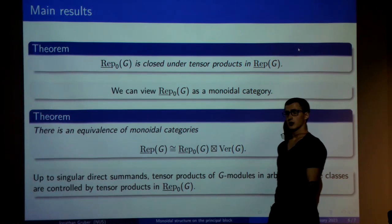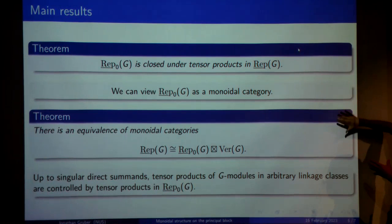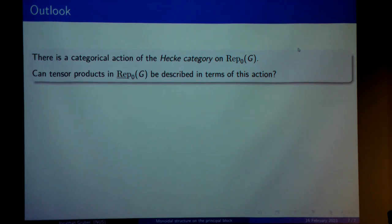If you're familiar with this theory, I like to think of the first result as a linkage principle for tensor products and the second as a translation principle for tensor products. And then finally, some outlook that involves some categorification, fitting with the name of the conference.